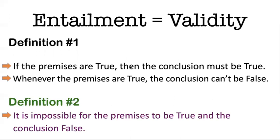There's another definition of validity: it's impossible for the premises to be true and the conclusion false. This is not a separate definition — I call it definition number two, but it's not a different concept. Definition number two and definition number one really come to the exact same thing. Sometimes thinking about it in terms of definition number two is slightly more helpful than definition number one.